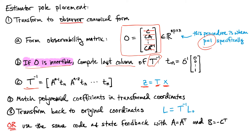We compute T inverse — not T — by multiplying O inverse by the vector [0, 0, ..., 1], and then construct the other columns of T inverse by multiplying by increasing powers of A. Once we have the observer canonical form we perform the pole placement, and then transform the result back from observer canonical form into the original state variables. Alternatively, we can use the exact same procedure as for state feedback but with A replaced by A transpose and B replaced by negative C transpose.